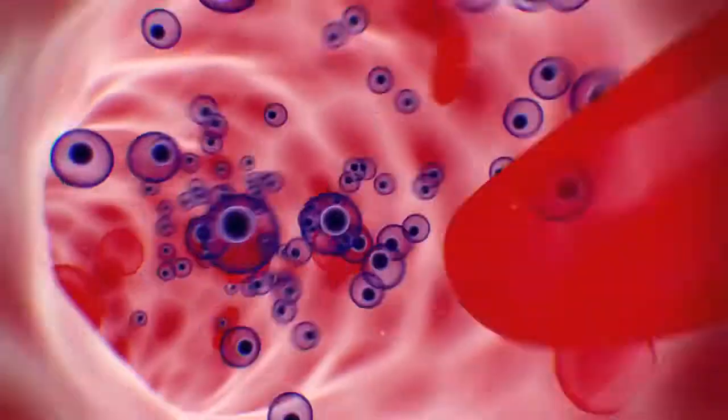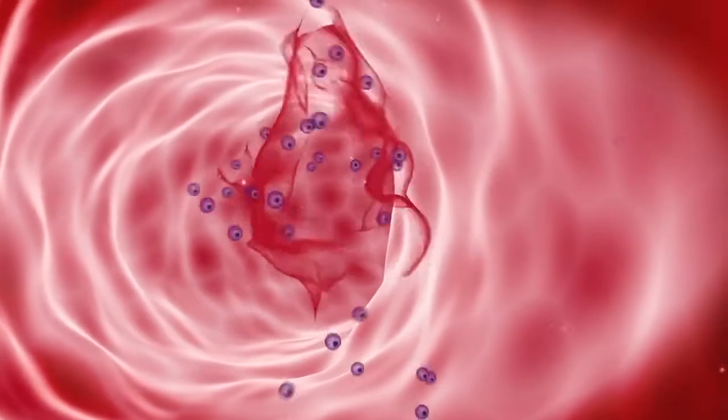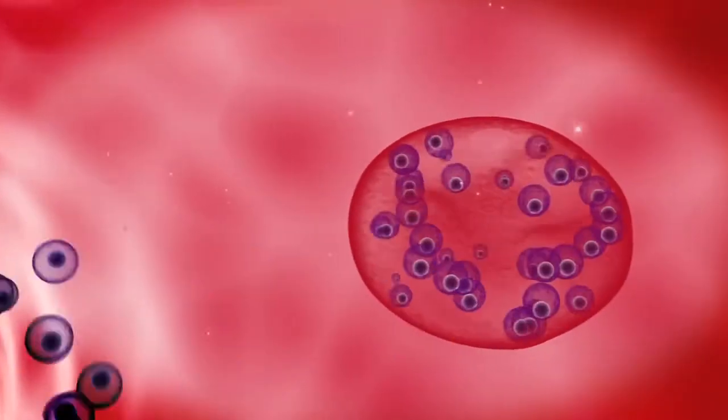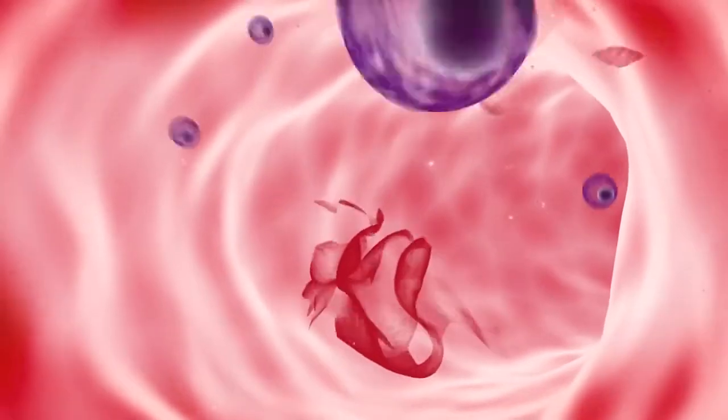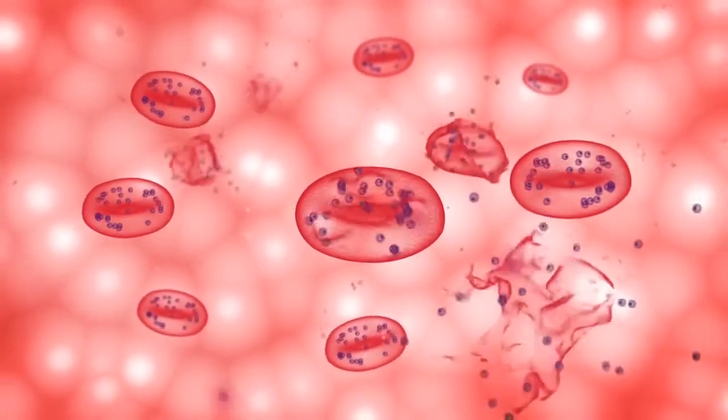They then infect healthy red blood cells, reproducing and eventually rupturing the cell, liberating more merozoites, which in turn go on to infect other cells, leading to the massive destruction of red blood cells.